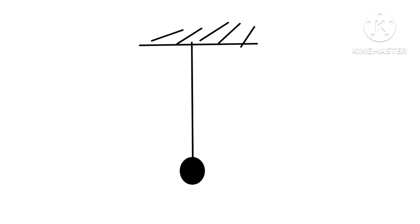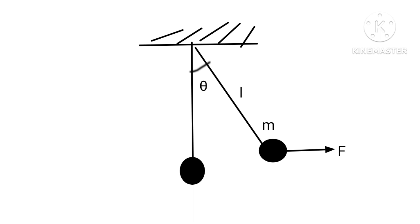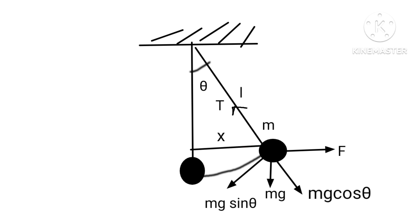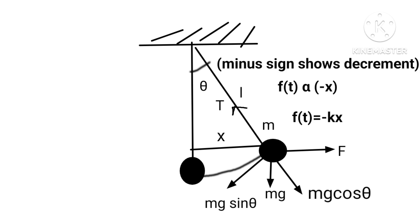Let us consider a bob of mass m tied with a string of length l. We take the bob to the extreme right position by a force F at point P. The forces acting are: weight mg acting vertically downwards, tension T in the string, and resolving into two components — mg cosθ that opposes tension T, and restoring force mg sinθ that tends to bring the bob to its mean position. When mg sinθ increases, displacement decreases, so F is directly proportional to x, that is F equals kx.